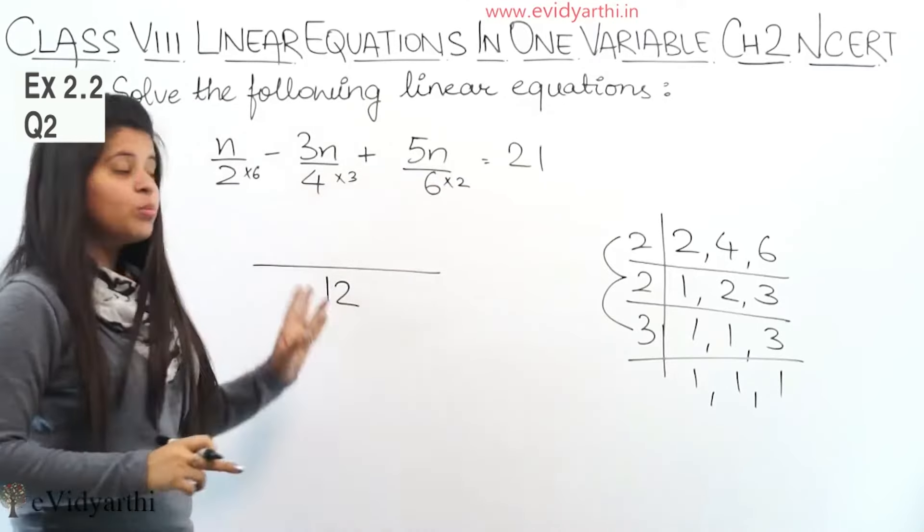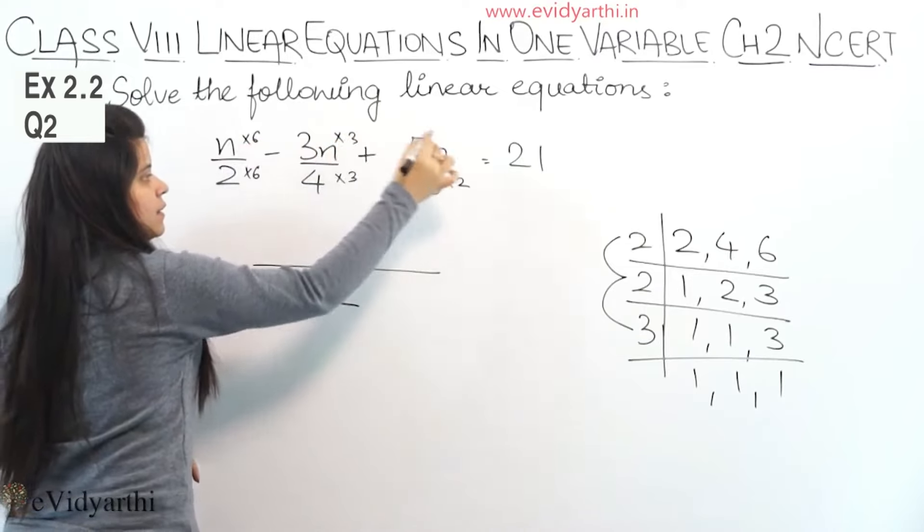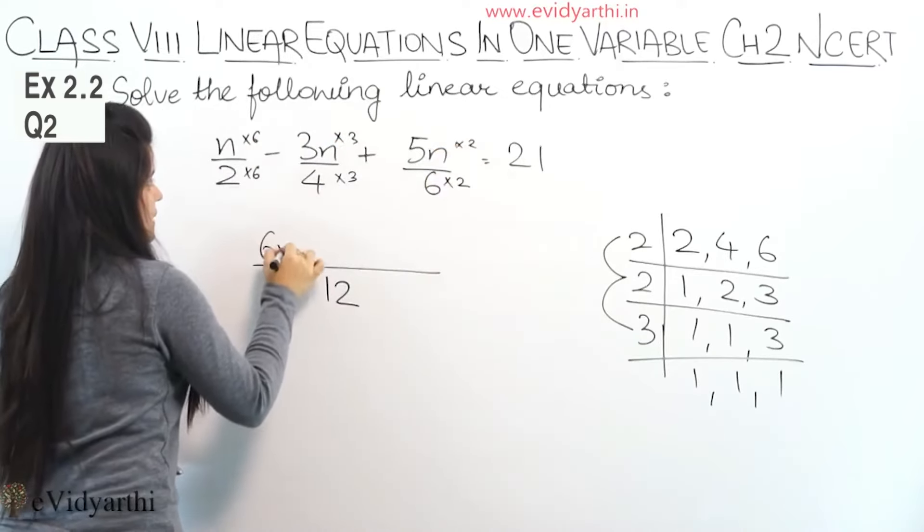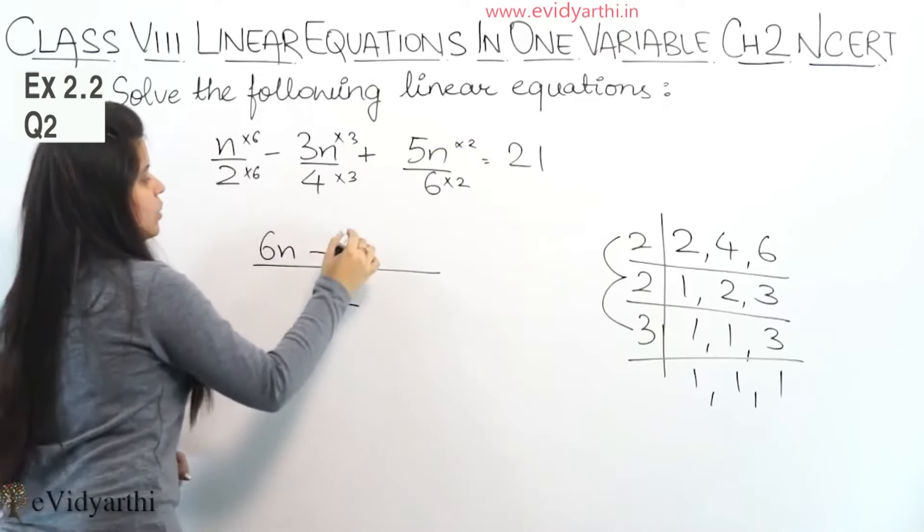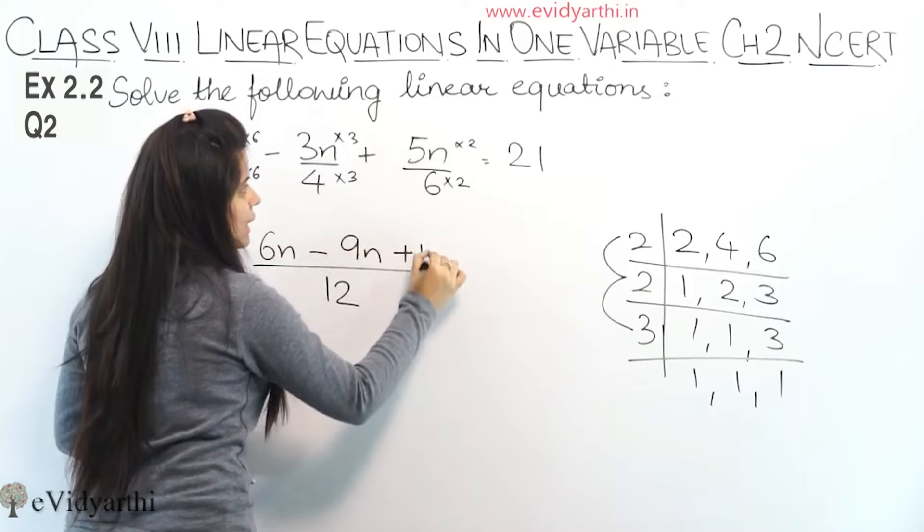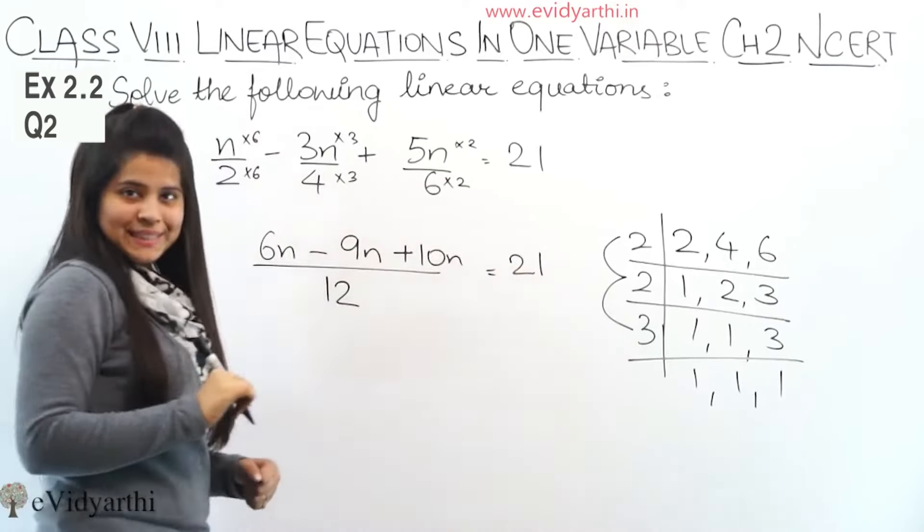So this number we have multiplied by the numerator, we have to do the numerator like this. So now, n into 6, 6n minus 3 into 3, 9n plus 5 into 2, 10n equals to 21.